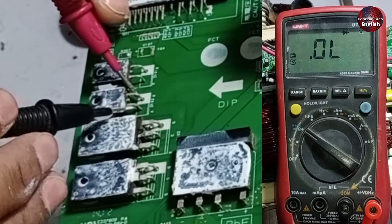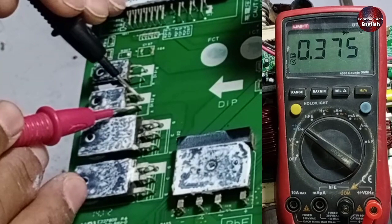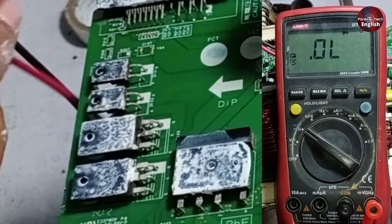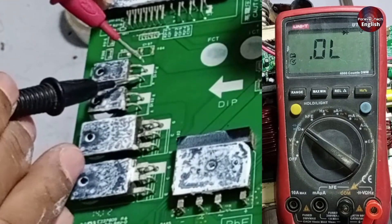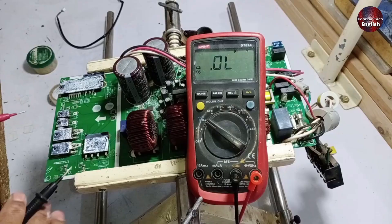Now let's check the diodes. On one side, they are completely blocked. On the other side, we are getting a 0.375 voltage drop. When we switch the probes, we shouldn't see 0, but rather a block, and that's what is happening. So far, everything is working fine.